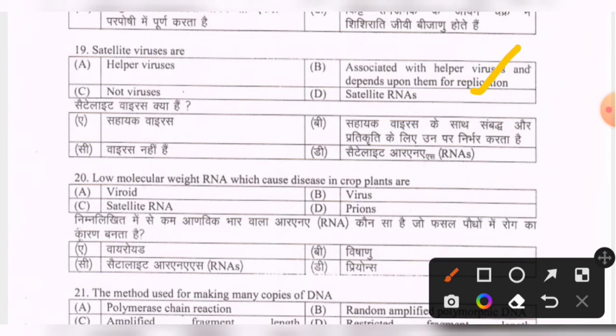Next question: low molecular weight RNA which causes disease in crop plants — options are viroid, virus, satellite RNA, prions. The correct option is the first one — viroid.